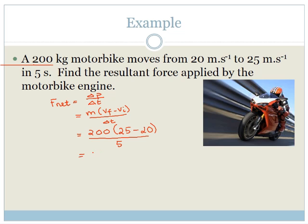So now we can solve this. We got 200. 25 minus 20 is 5 over the time, which is 5 and 5 and 5 cancels. So the net force is 200 and what is force measured in? It is newtons. Nice and easy. Do you agree?